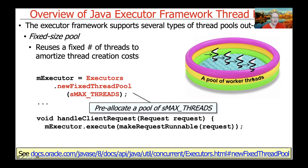You create a fixed-size thread pool by calling executors.newFixedThreadPool, passing in whatever size you want — let's say four, because we might have four cores. Usually the size of the thread pool is a function of the number of cores in some way or another. So we pre-allocate this pool.